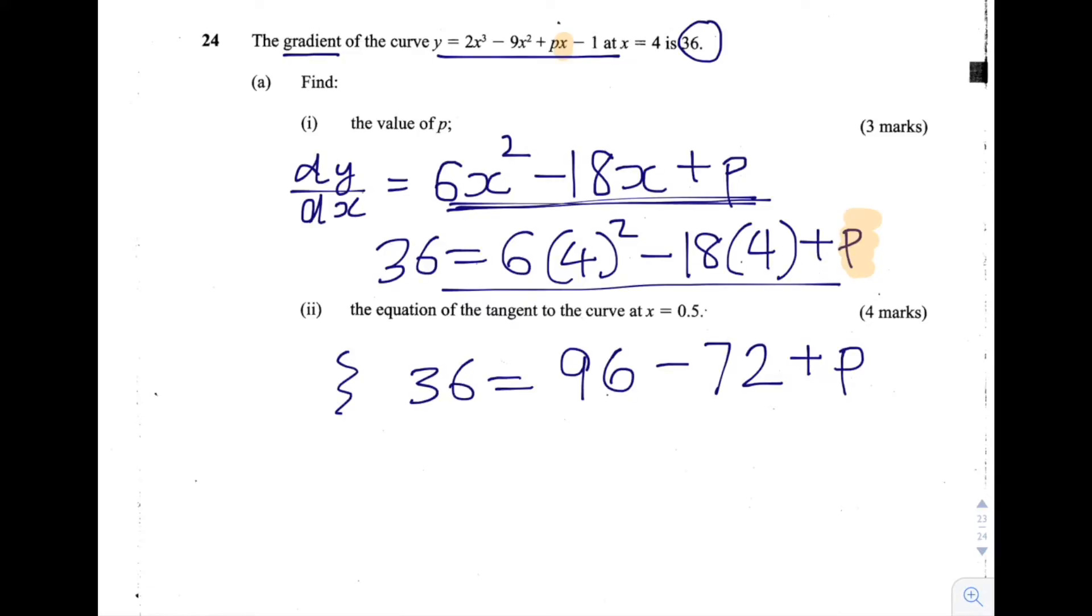So we have 36 is equal to 96 minus 72 plus p. We can simplify this here, and then whatever we get here, we're going to move it to the other side so we can isolate p.